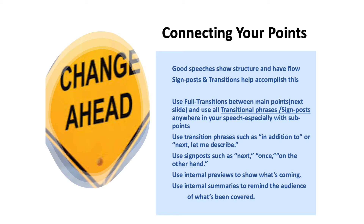Transitional phrases or signposts would be things like 'in addition to,' 'next,' 'let me describe,' or enumerations like 'first,' 'second,' 'third,' or 'on the other hand.' In your speech packet and in your text, there's a table with a lot of these different phrases spelled out for you. Think of the speech like construction happening in the metroplex — road closures and lane changes with signs posted to give warning of what's coming up. We want to map out our speech with these road signs to let the audience know where you are, because they don't see your outline. All they have are your verbal and nonverbal indicators.